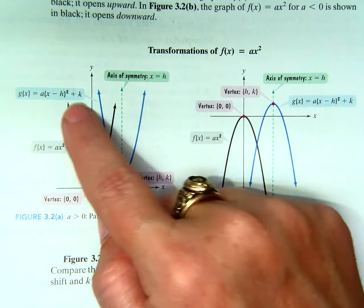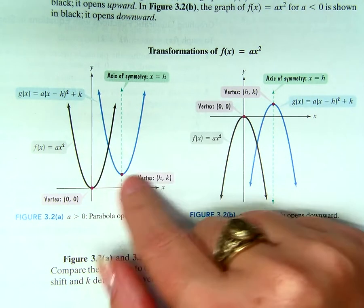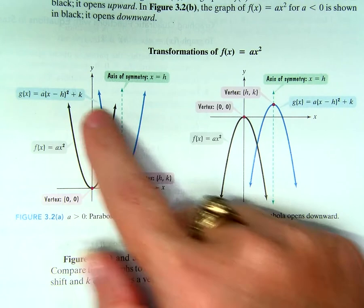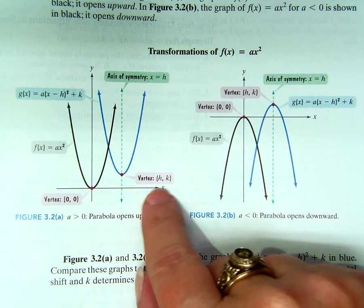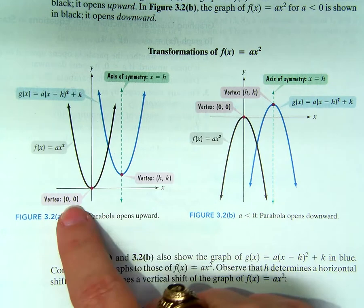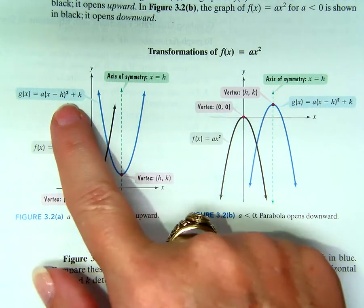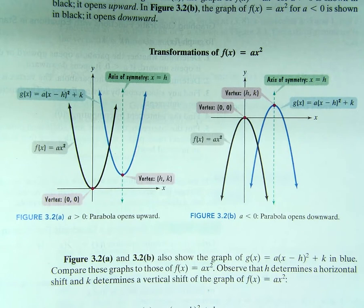Just to make sure, this is the parent function. This is a transformed function where H and K is the new vertex. Vertex of HK. It was at zero, zero. Now it's at HK. The H is a horizontal shift, so it's moved left or right. And the K is a vertical shift, so it's moved up or down.